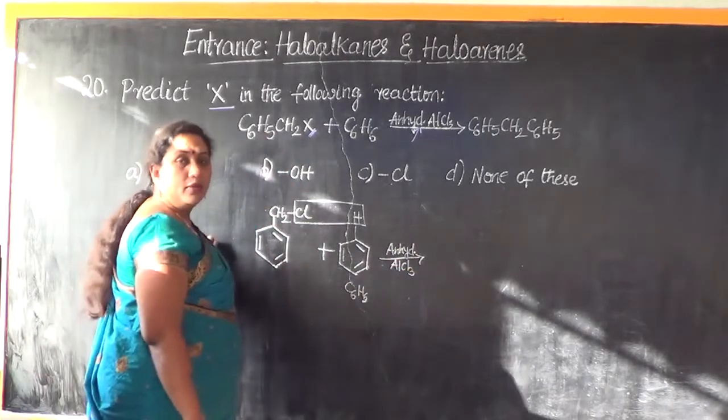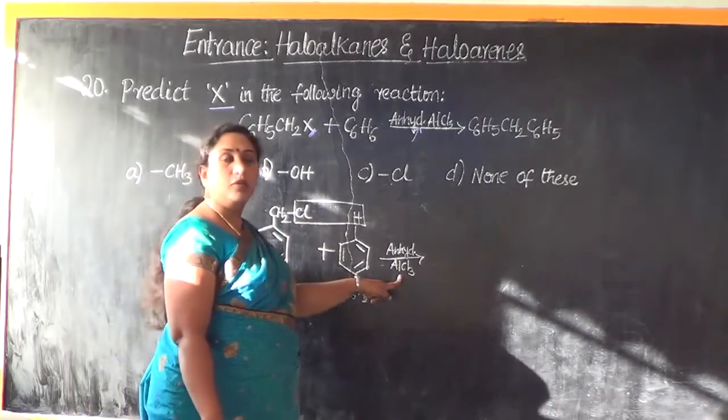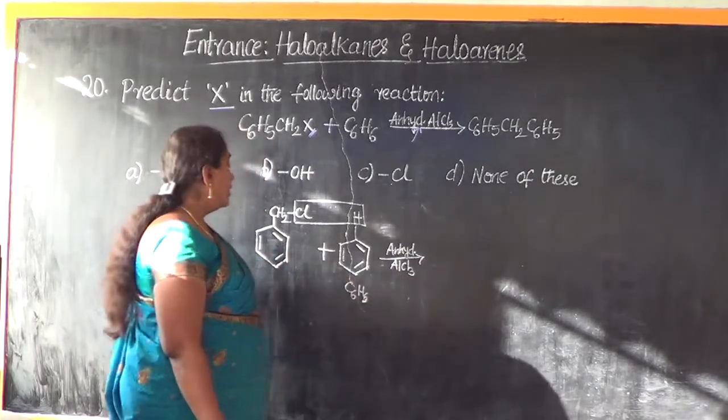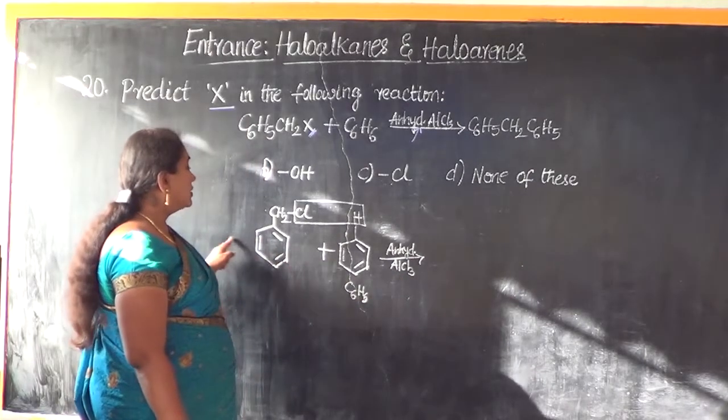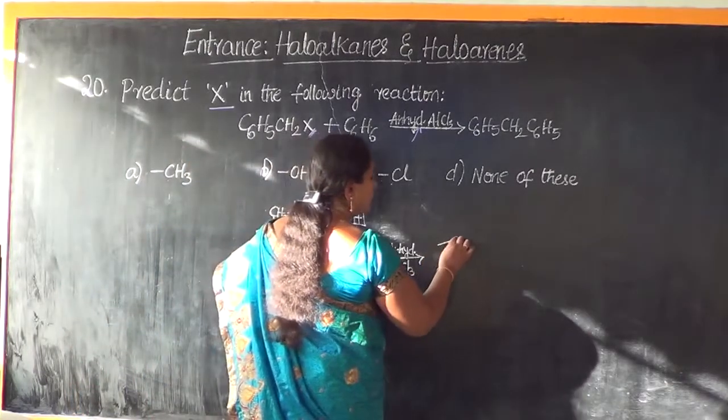It involves a reaction mechanism wherein the Cl will be taken by this and it becomes AlCl4 minus and it forms the carbon cation. So, like that the reaction proceeds.